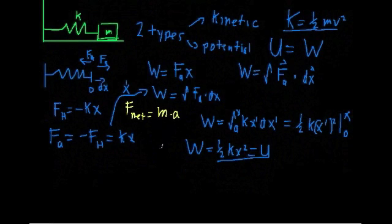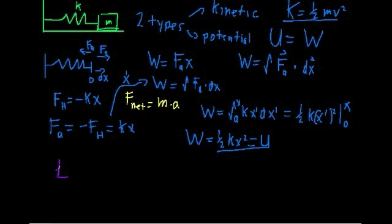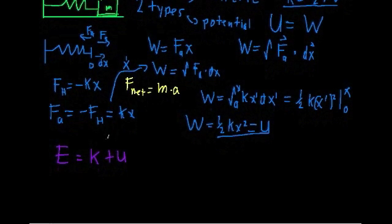Now let's take a look at the total energy of the system, denoted with capital E. At any given time, the total energy has to equal the kinetic energy plus the potential energy, since there are only two types of energy in the system. We're assuming this is an ideal mass and spring system where energy can't leak out.